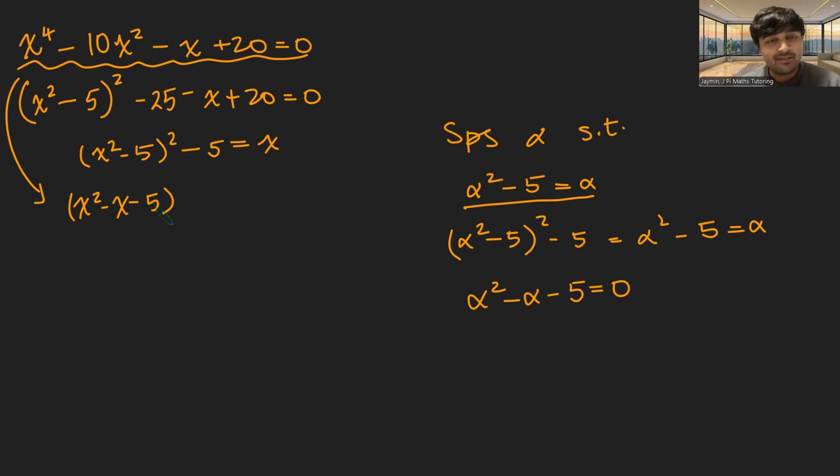And now this becomes a lot more simple. We're just going to divide this quartic x to the 4 minus 10x squared minus x plus 20 by x squared minus x minus 5. And in doing so, we get x squared, because x squared times x squared gives us x to the 4. We're going to have a minus 4 at the end here.